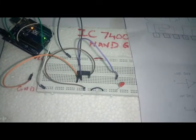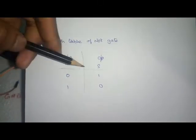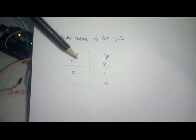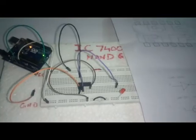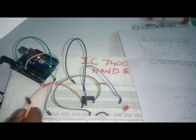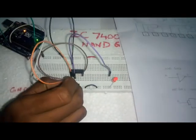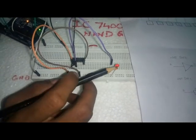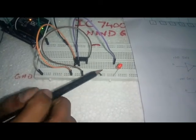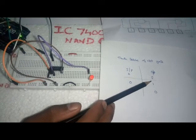Now that the circuit is completed, we must verify it with the truth table. This is the truth table of the NOT gate, where the output is opposite to the input. If the input is 0, we get output 1. For the first test, I am taking the input as 0 by connecting the input pin to the ground section. As you can see, my LED is glowing, which shows that the output is 1. The first part is successful: when input is 0, output is 1.